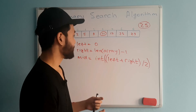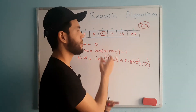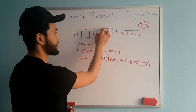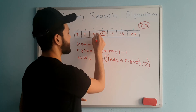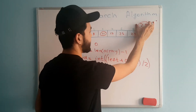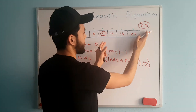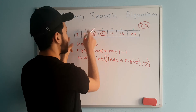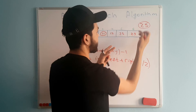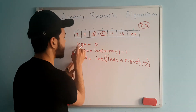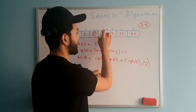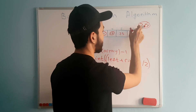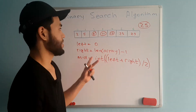If the target value is less than the middle, we update right to middle minus one. For example, if the middle index is 3, then right becomes 3 minus 1 which is 2 — meaning we only look at the left side of the array. If the target is greater than the middle, we update left to middle plus one, moving to the right side. We keep taking the new middle and comparing until we find the target.